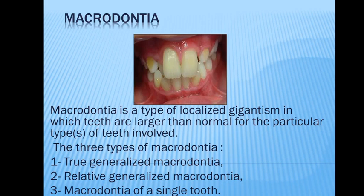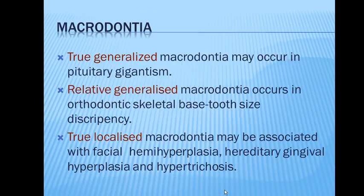There are three types of macrodontia: true generalized macrodontia, relative generalized macrodontia, and macrodontia of a single tooth. True generalized macrodontia may occur in pituitary gigantism — meaning people who are very tall and large, where of course their teeth would also be huge.